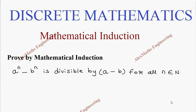Hi students, this is Alex here. In this video we are going to prove by mathematical induction that a^n minus b^n is divisible by (a - b) for all n belonging to natural numbers. Let's take this as P(n), that is a^n minus b^n.